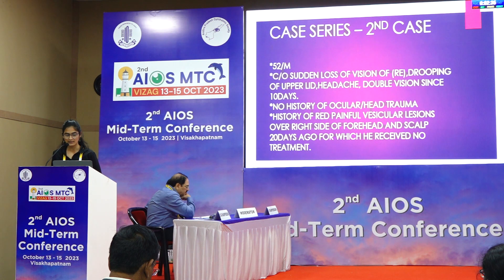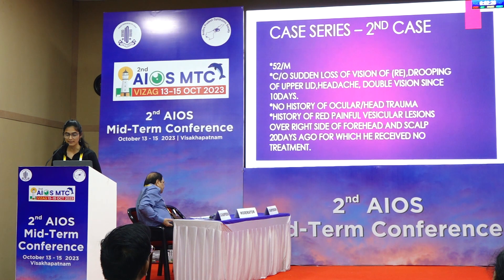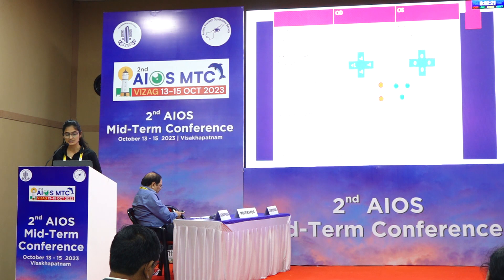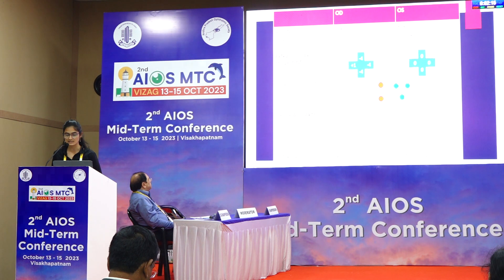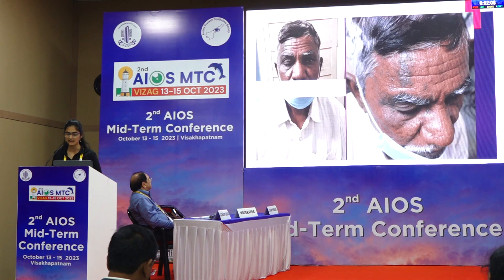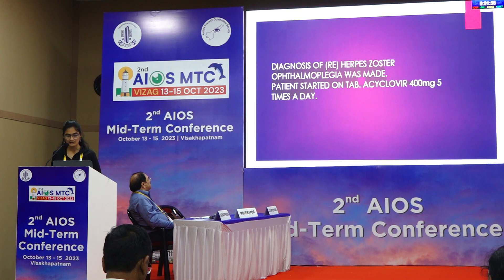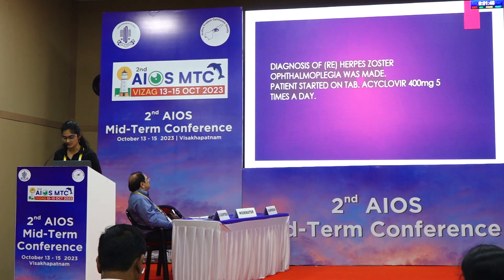Second case: a 52-year-old male presented with sudden loss of vision in the right eye, drooping of upper eyelid, headache and double vision since 10 days. History of painful vesicular lesions over the right side of the forehead and scalp 20 days ago for which no treatment was received. Vision in right eye was 1/60 not improving further. HCRT showed 20 degrees exotropia; extraocular movements limited in all directions except abduction in the right eye. Worth 4-dot test showed diplopia. Anterior segment showed right eye RAPD. Diagnosis of right eye herpes zoster ophthalmoplegia was made; tablet acyclovir 400 mg five times a day was started, but the patient was lost to follow-up.